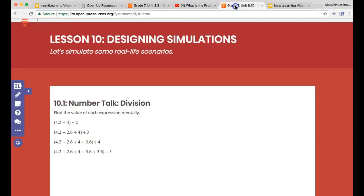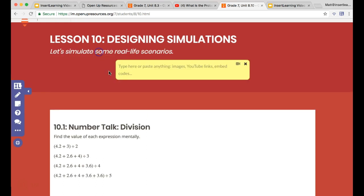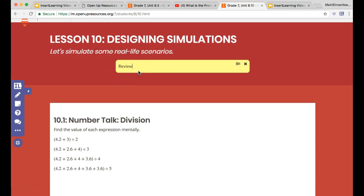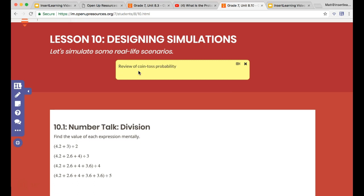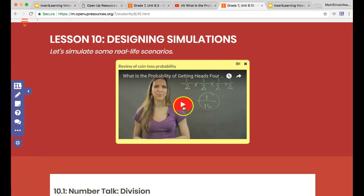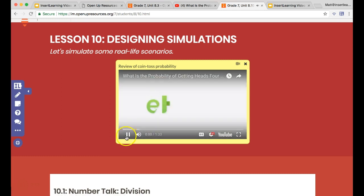I'm just going to copy the URL and over here I'm going to add in a sticky note: review of coin toss probability. I'm just going to paste the URL to that YouTube video and now it's embedded right there. Students can actually watch this video right here.